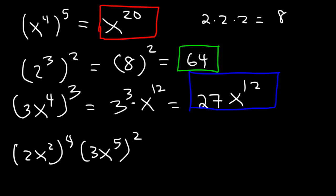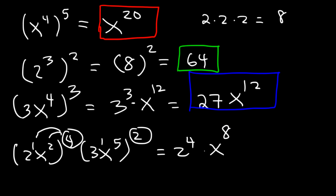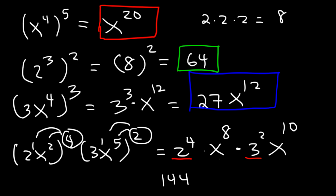Now for 2x squared raised to the fourth times 3x to the fifth squared, let's distribute the exponents. For the first term: 1 times 4 is 4, so 2 to the fourth; and 2 times 4 is 8, so x to the eighth. For the second term: 1 times 2 is 2, so 3 squared; and 5 times 2 is 10, so x to the tenth. Now 2 to the fourth is 16, 3 squared is 9, and 16 times 9 is 144. Then x to the 8 times x to the 10: add the exponents, 8 plus 10 is 18, giving x to the 18th power.